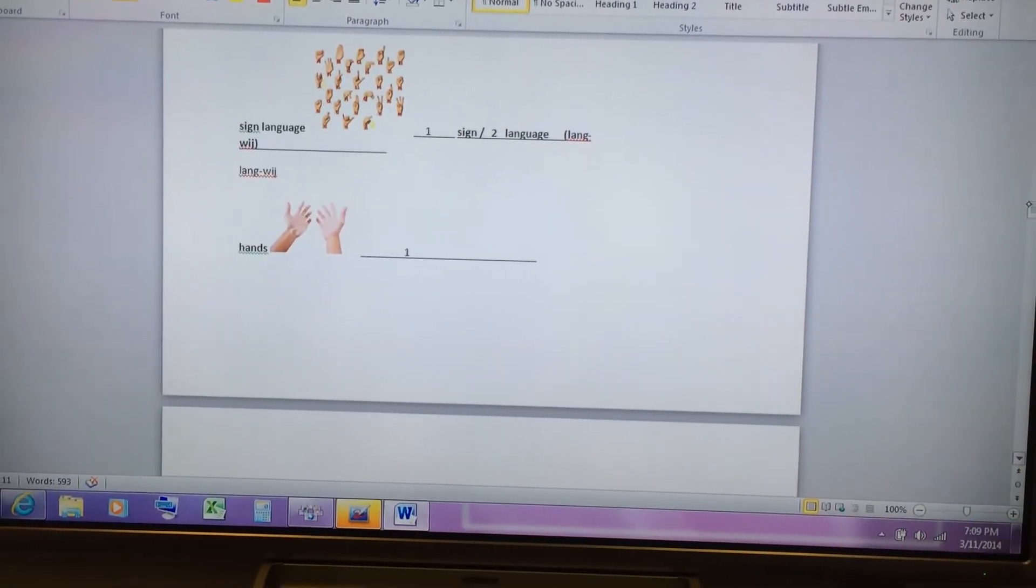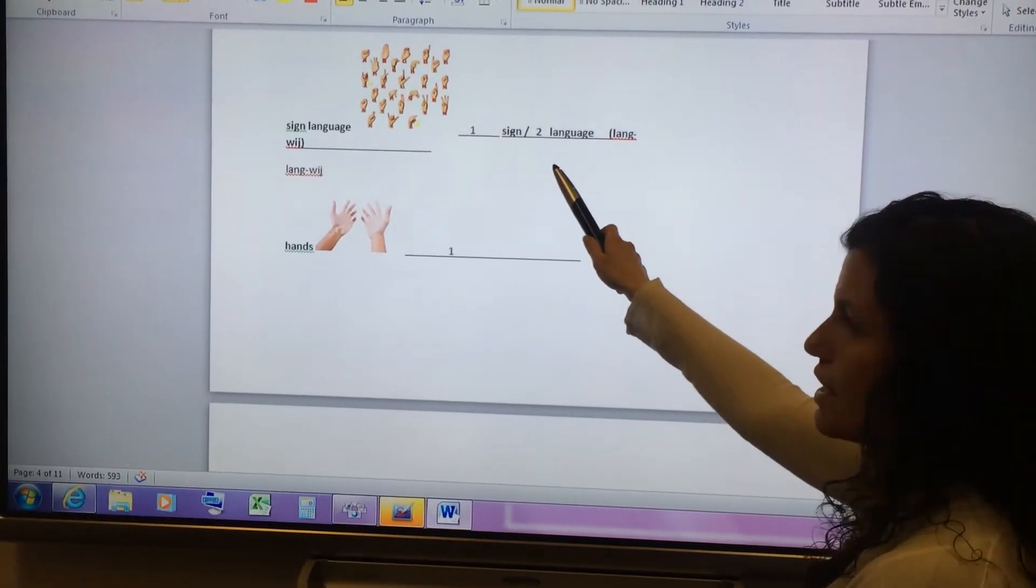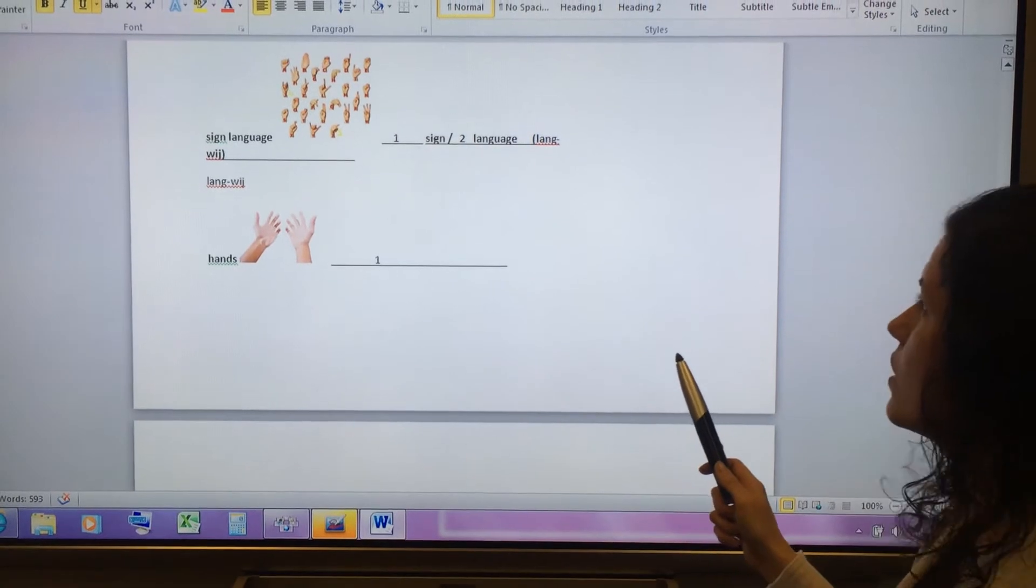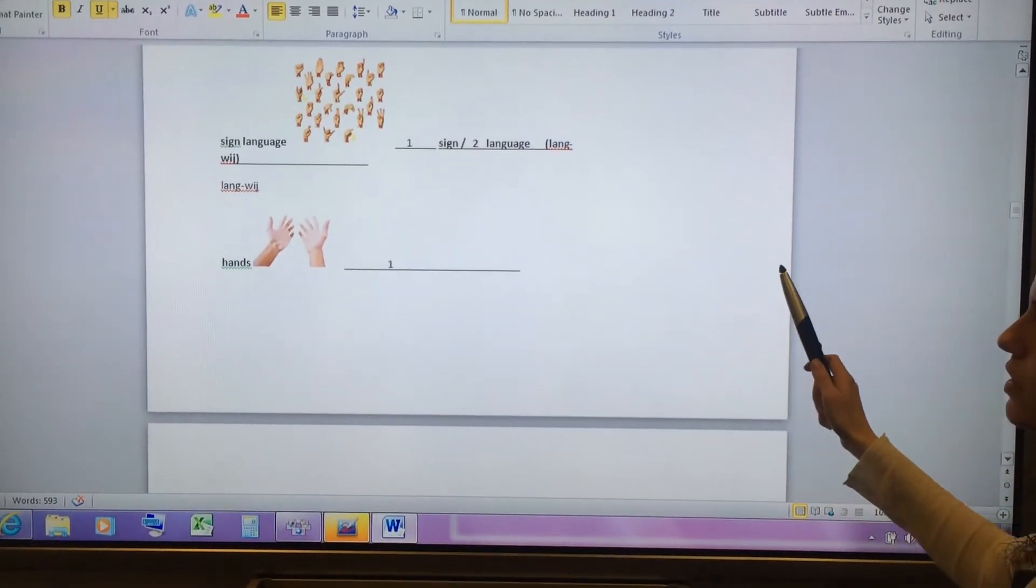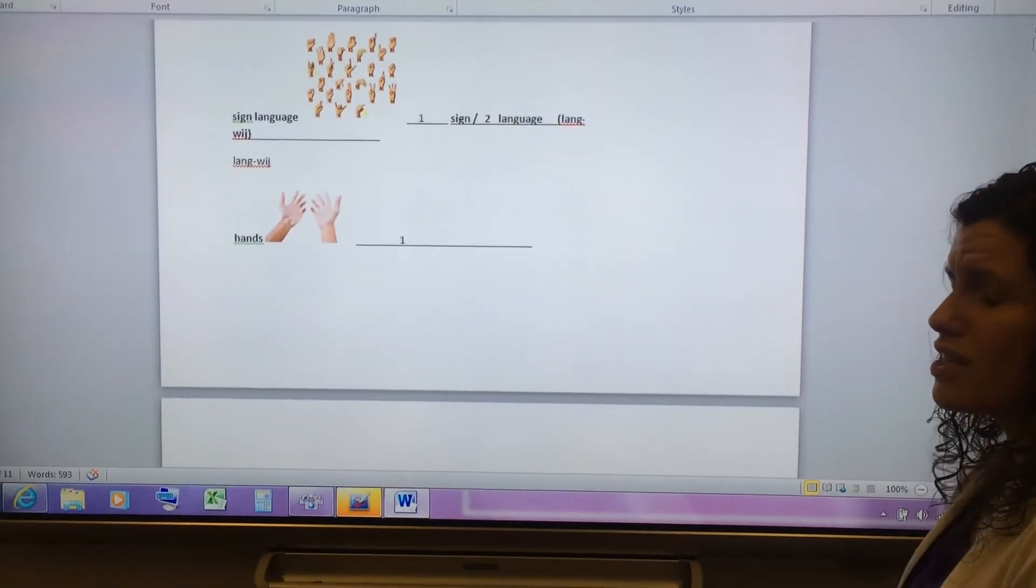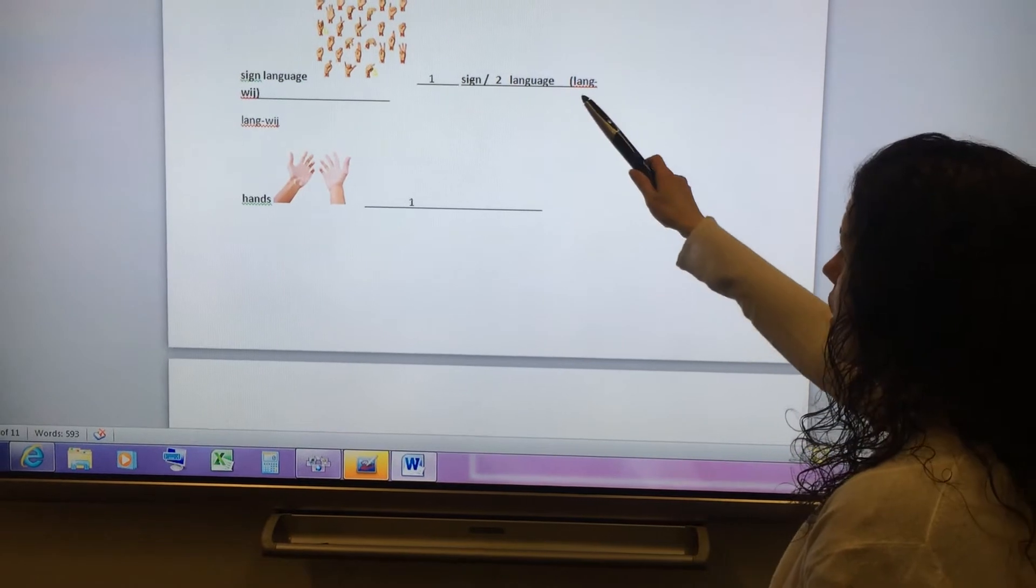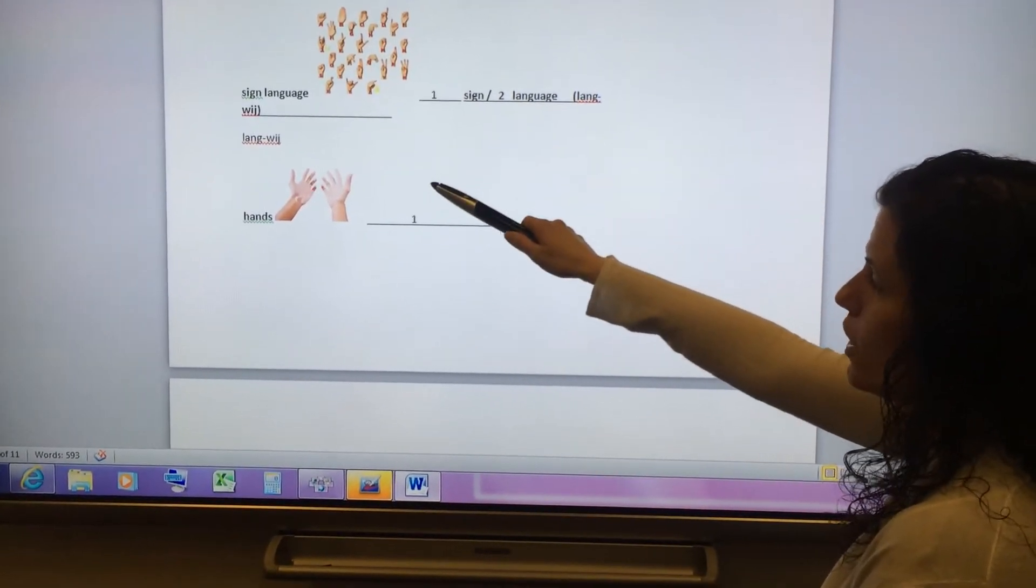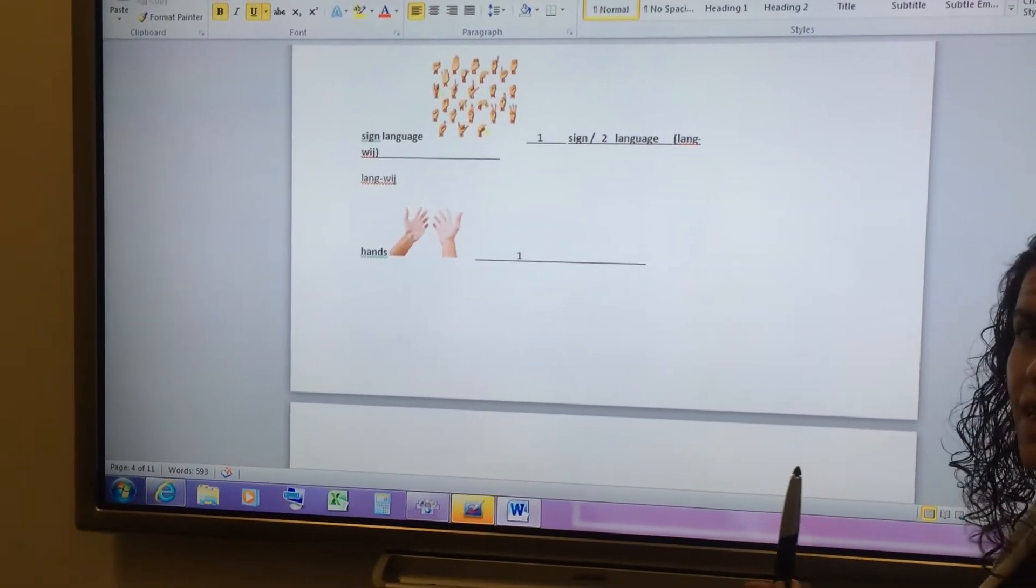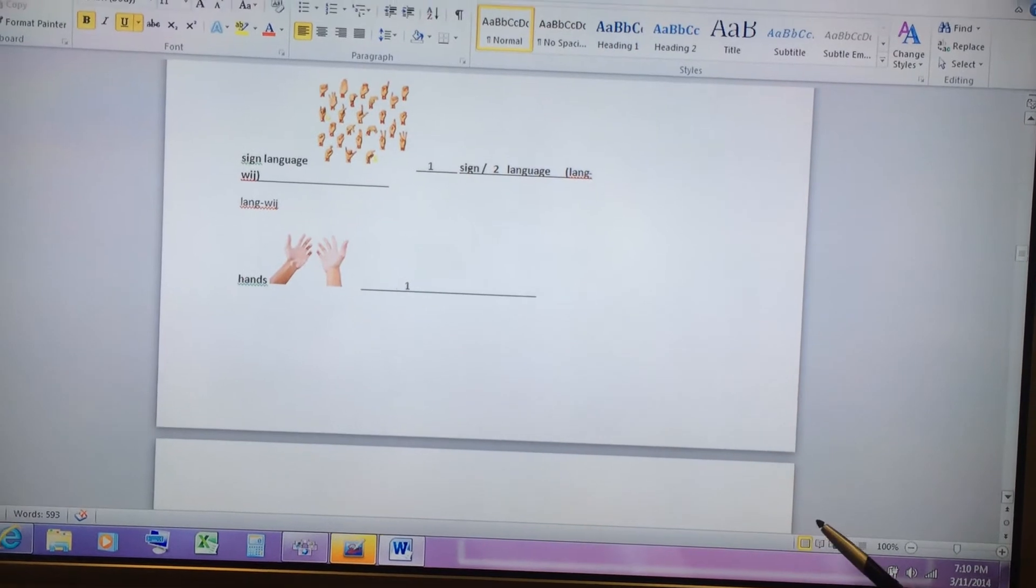Next, we have the word sign language. Sign has a silent G and a long I. And it's one syllable. Sign. The word language has two syllables. But right over here, the end part, the G sounds more like a J. So I did some phonetic spelling. Lang is fine. Lang, which. It sounds like W-I-J. So it's sign language. Practice that. Hands. Hands. One A. One vowel. One sound. Hands. One syllable.